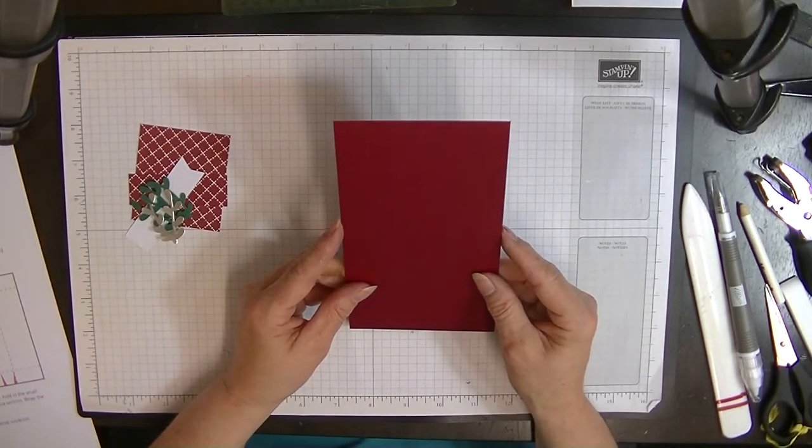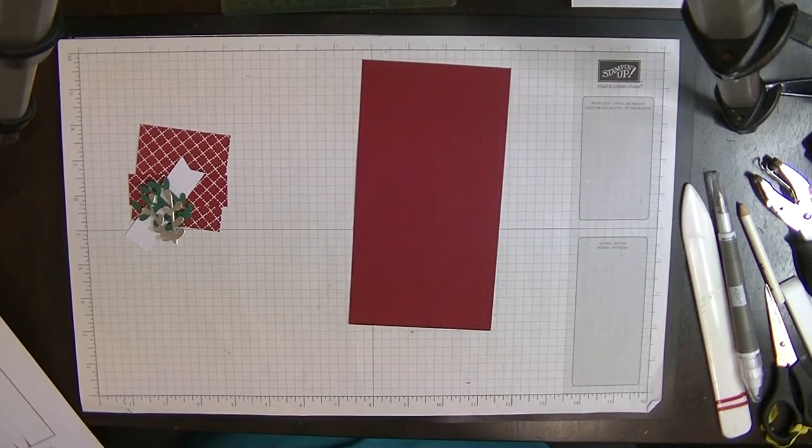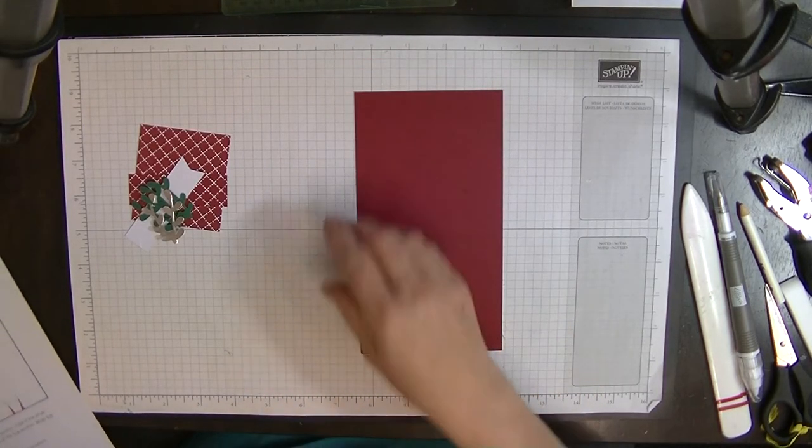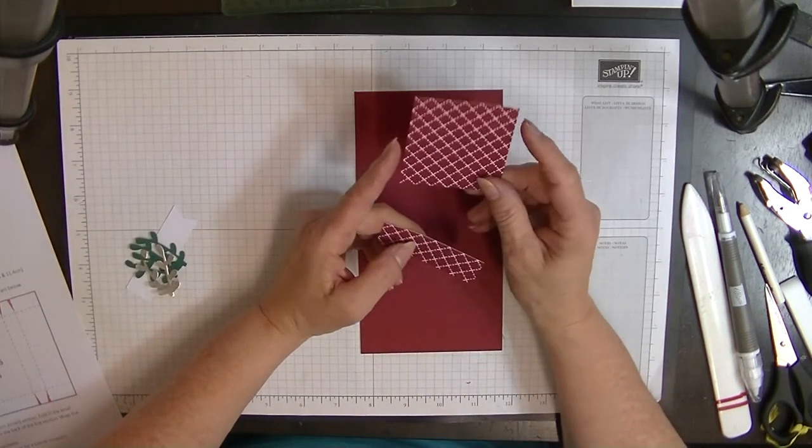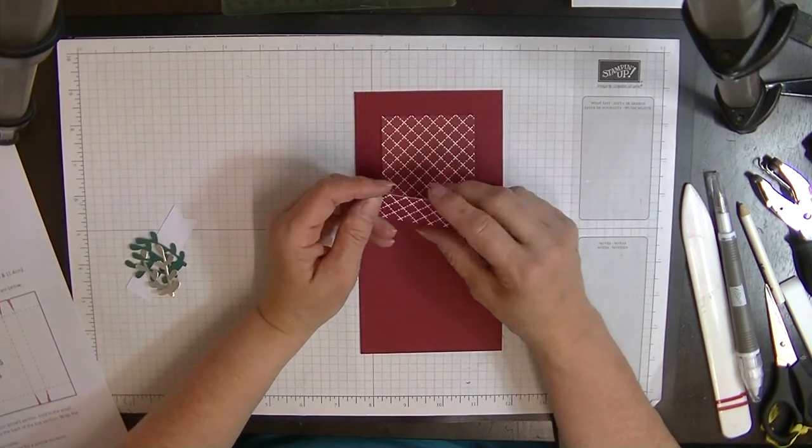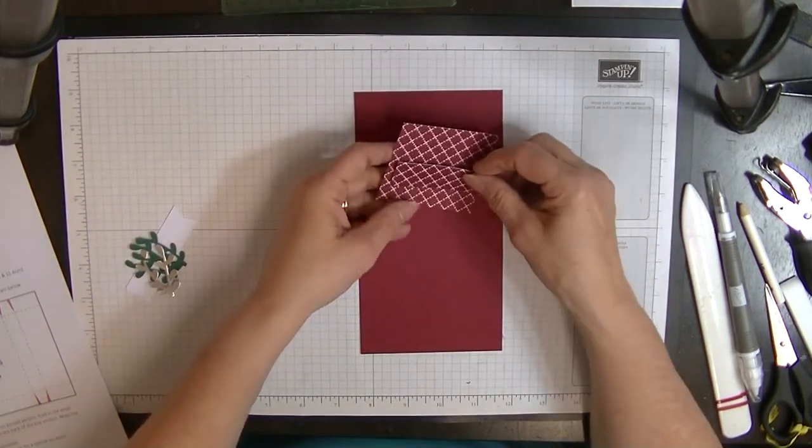So we've got a piece of card that measures 7.5 by 4. If I put my glasses on, I might be able to read this. And then two pieces of designer series paper that measure 2.75 by 2.5 and 2.75 by 7.8 of an inch.